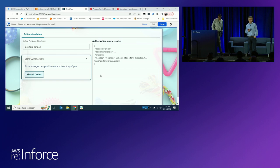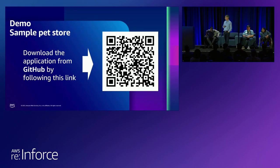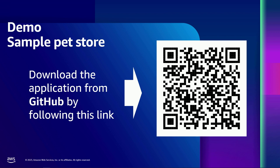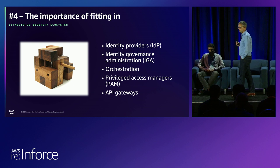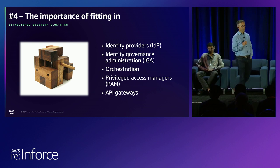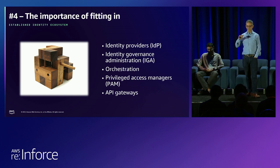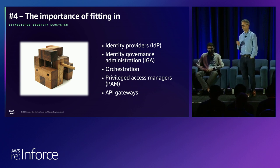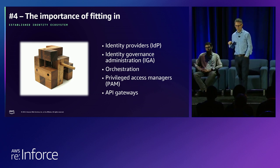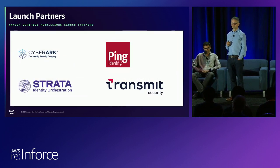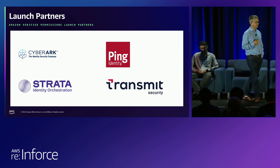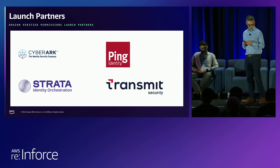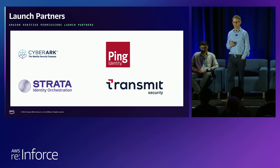Thank you both. Here's the QR code — you can download the sample app and play around with Verified Permissions. The last thing I want to touch on is fitting into the existing identity ecosystem. The identity ecosystem is very rich and well established: identity providers, identity governance and administration providers, orchestration providers, privileged access management, API gateways. It was important for us as we launched this product to establish a partner program and work with partners to explain to our customers how these products work together.